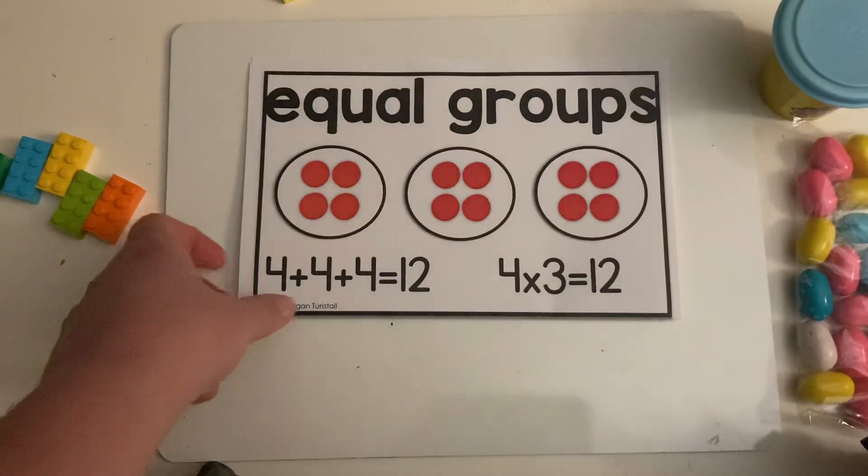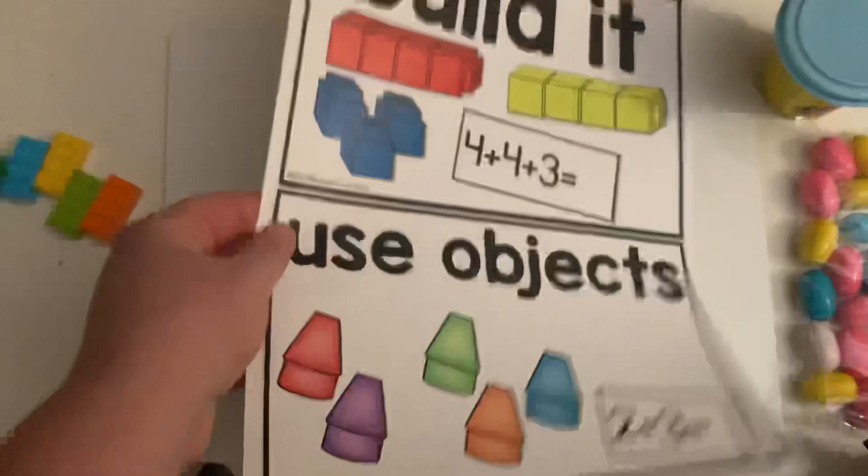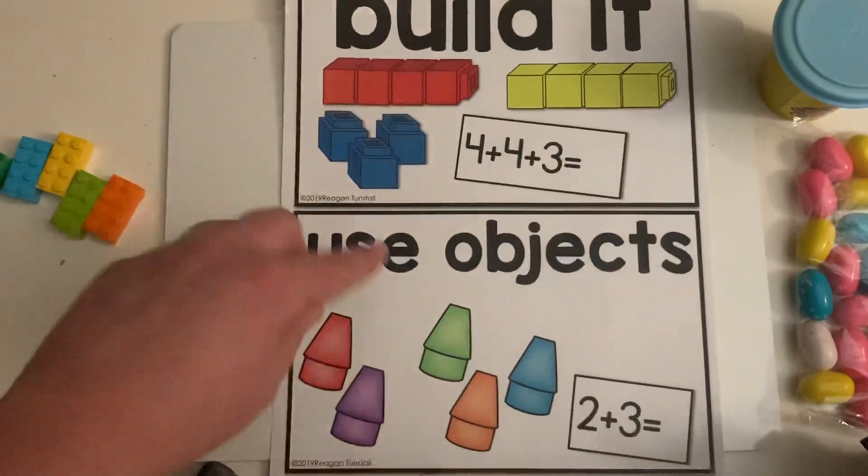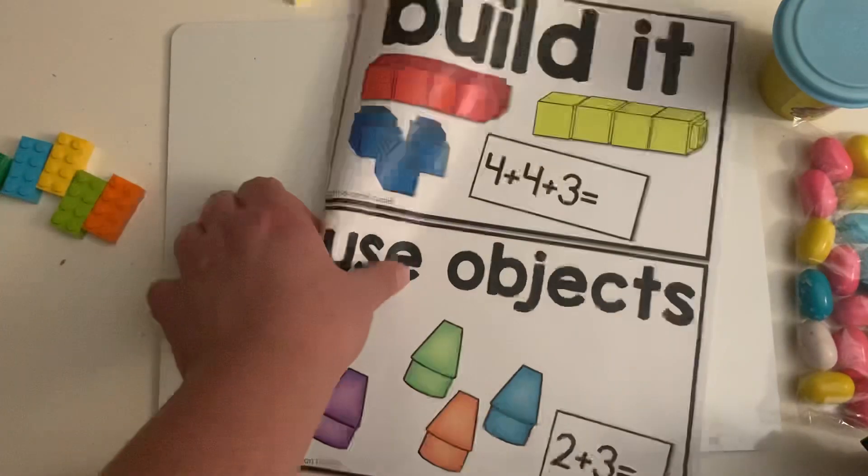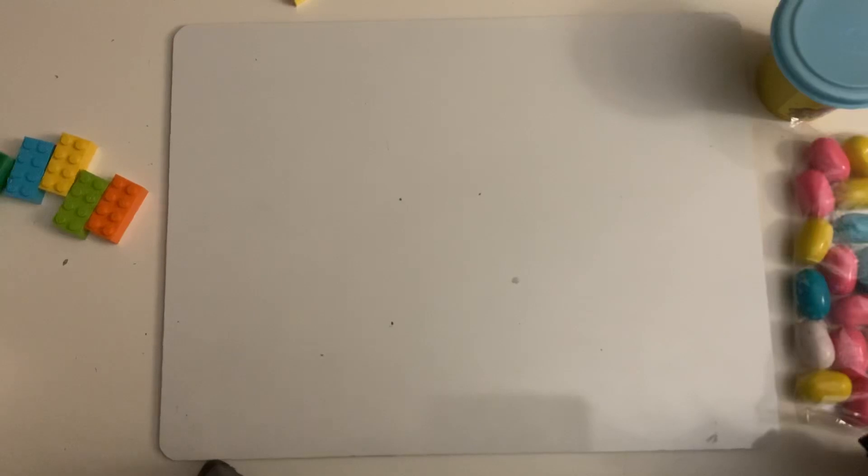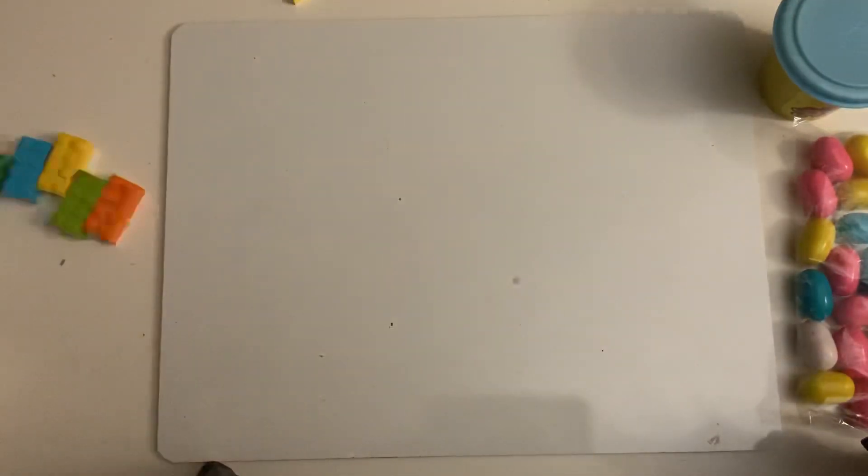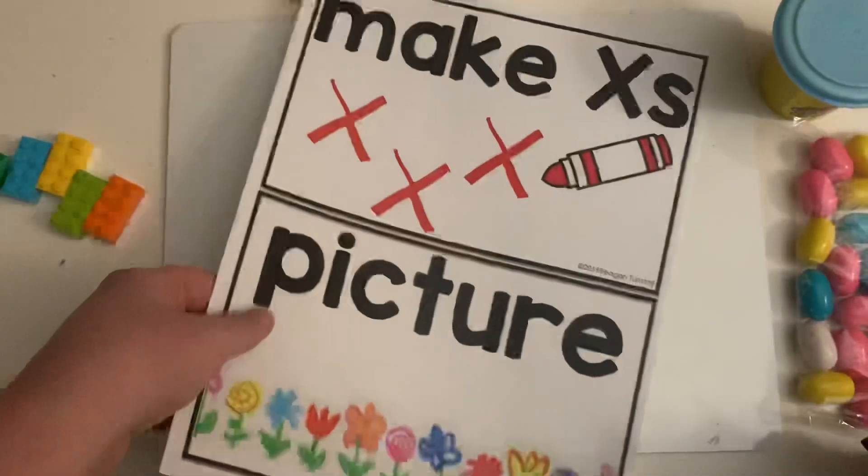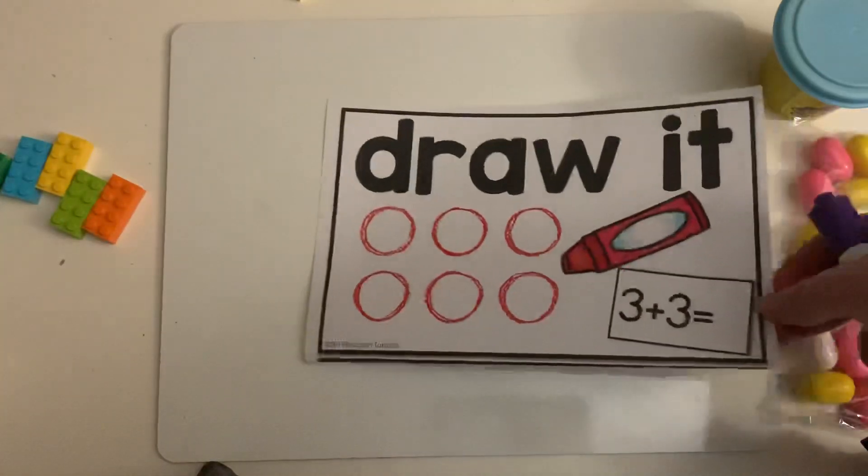Today, we're going to look at some of the strategies you can use to make a multiplication problem. You can build it using blocks, any item you have around the house. You can use different objects like erasers, candy, cereal. You can make it using Play-Doh or clay. Or you could draw it using X's, drawing pictures, or just drawing simple circles.